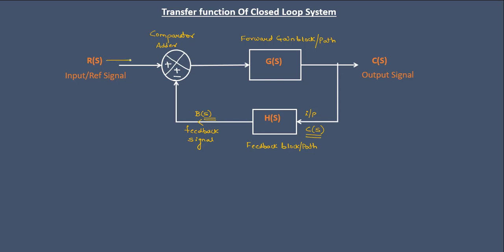One input to the comparator comes from the reference signal R, and the other input is the feedback signal B. Both signals R and B are compared in the comparator, giving an output which is the error signal E, also called the difference signal. The input to the forward gain block G is the error signal E, and the output of the forward gain block G is the output signal C.